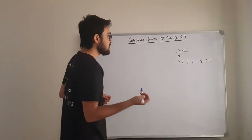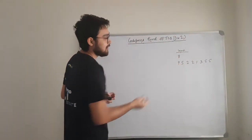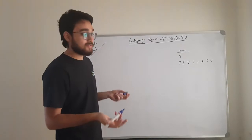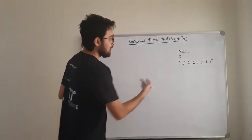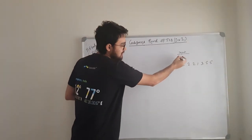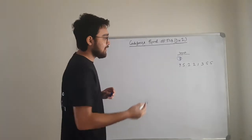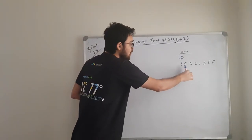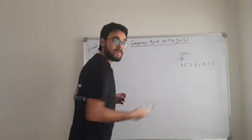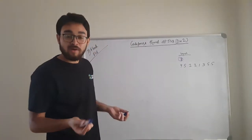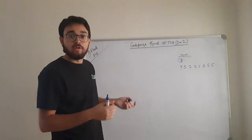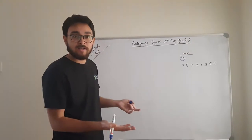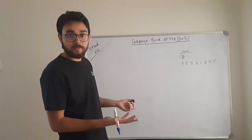What the problem says is: you are given an array filled with colors. In this case, you are given an array of size 8 and the colors in all those 8 positions are 8, 4, 5, 2, 2, 1, 3, 5, 5. If two cells adjacent to each other have the same color, then they belong to the same component.